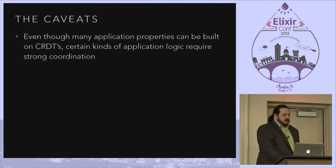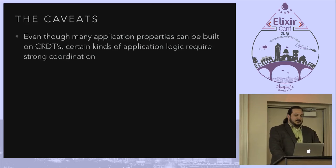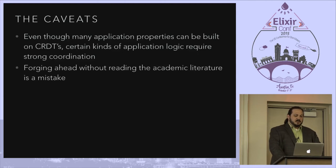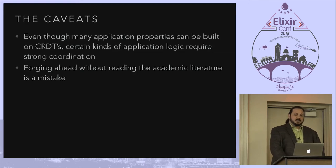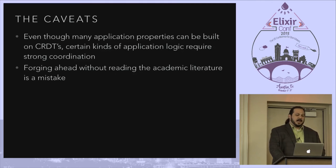Even though many application properties can be built on CRDTs, there are kinds of application logic that require strong coordination. But you can actually get away with a lot by contorting your problem to fit into the CRDT itself. Forging ahead without reading the academic literature is currently a mistake. There are a lot of subtleties, and you have to understand how actors work and what a unit of concurrency actually means in the literature. The libraries aren't documented to the point where you could just pick them up and go. I'm hoping to change that eventually.